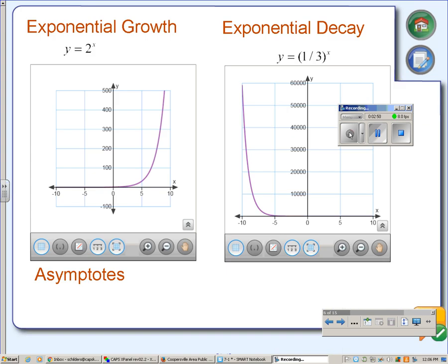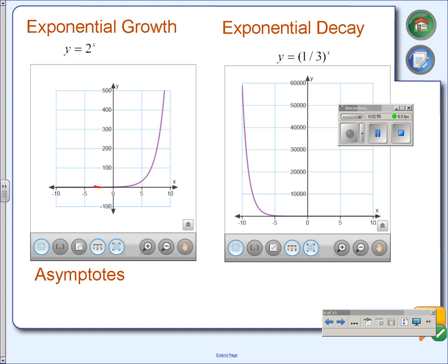So we have two basic types of exponential functions. The exponential growth function is a growth when it goes upward and to the right. As the x values increase, the y values increase. The decay function occurs when it's coming downward as you go to the right. So as your x values increase, the y values decrease.